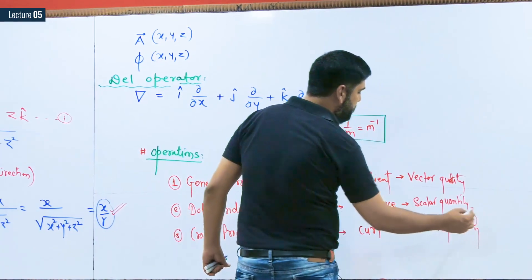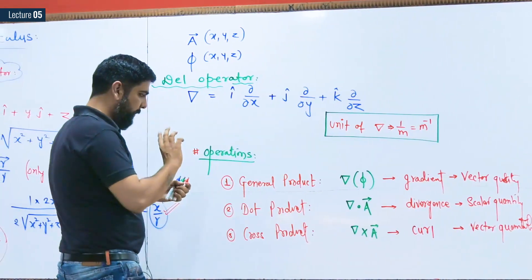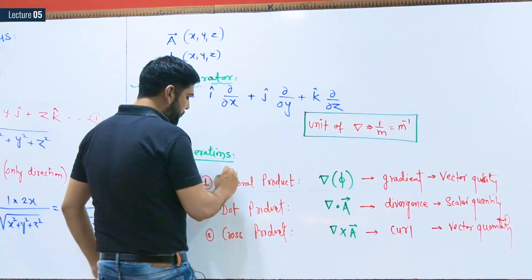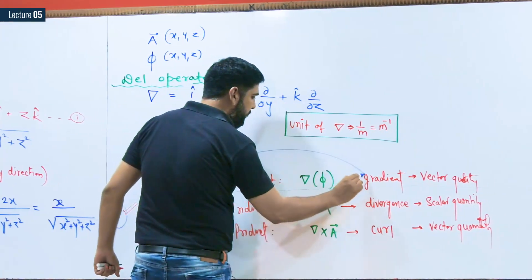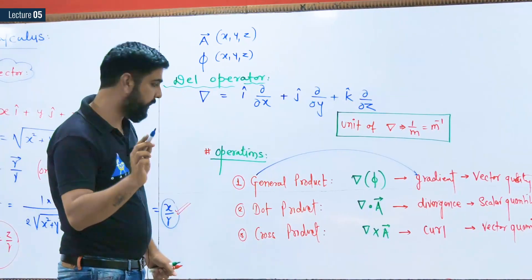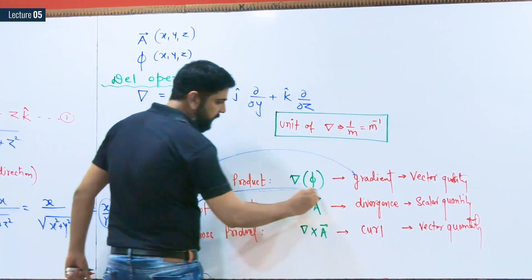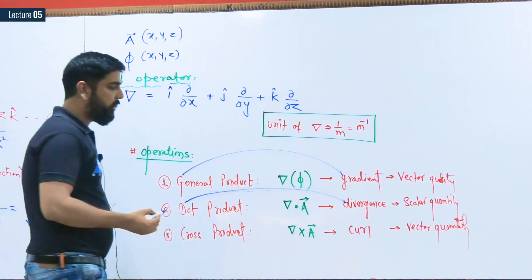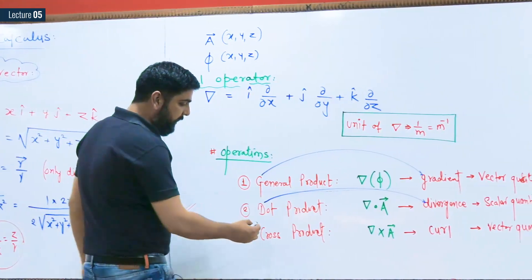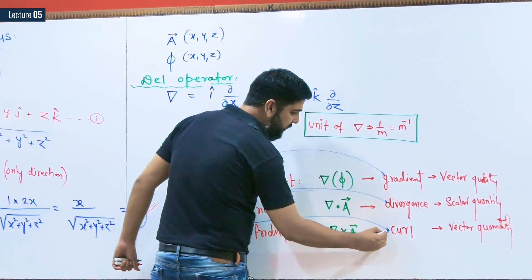Here is a helpful mnemonic: if we have a general product it relates to gradient — G for general, G for gradient. If we have a dot product it relates to divergence — D for dot, D for divergence. And if we have cross product it relates to curl — C for cross, C for curl. These are the three operations of the del operator.